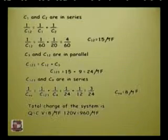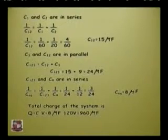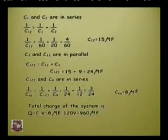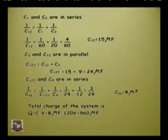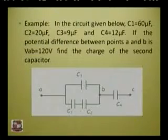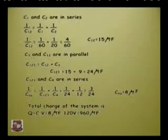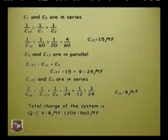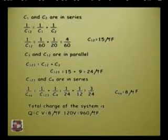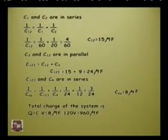Using the concept of series and parallel combination of capacitors: C1 and C2 are in series, so 1/C12 = 1/C1 + 1/C2. You will get C12 = 15 microfarad. Again, C12 is in parallel with C3, so C123 = C12 + C3 = 15 + 9 = 24 microfarad.